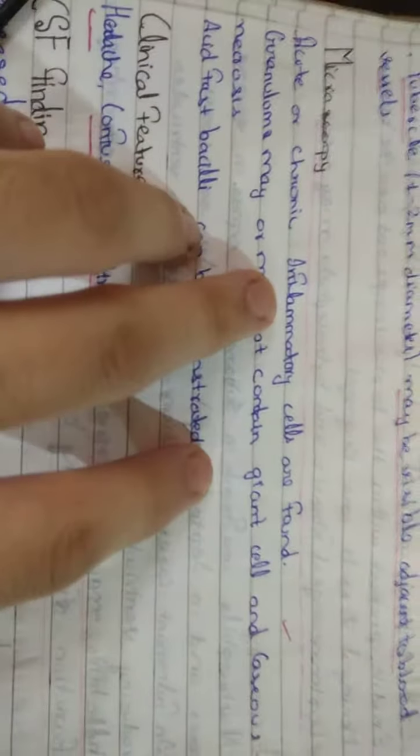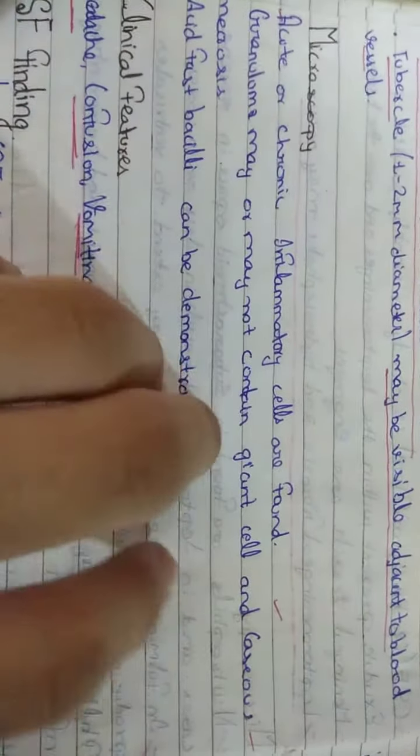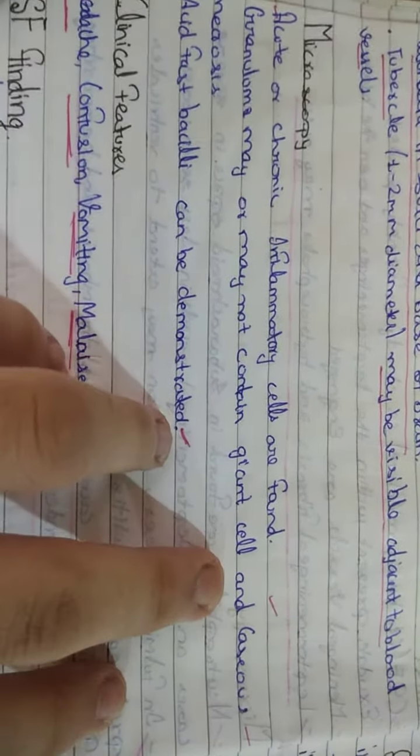Microscopic features: acute or chronic inflammatory cells are found. Granulomas may or may not contain giant cells and caseous necrosis. Acid-fast bacilli can be demonstrated.